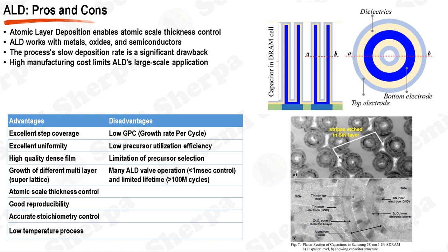This uniformity is particularly beneficial when dealing with complex three-dimensional geometries where excellent step coverage is required. A representative example is the deposition of zirconia-alumina-zirconia dielectrics, so-called ZAZ, in DRAM capacitors. Moreover, ALD can create high-quality dense films with very low levels of impurities, as no gas phase reactions occur in the deposition process. ALD can be used with a wide range of materials, including metals, metal oxides, and semiconductors, enhancing its versatility.